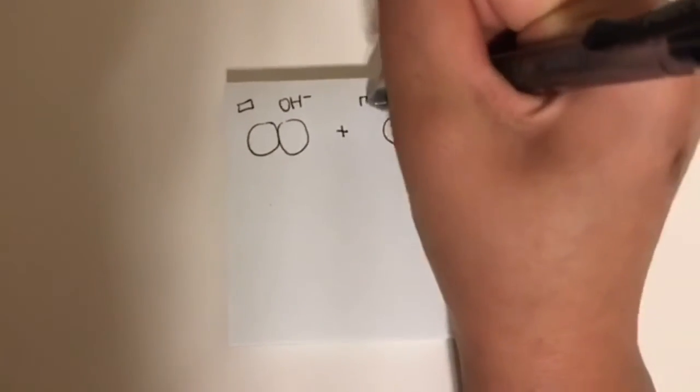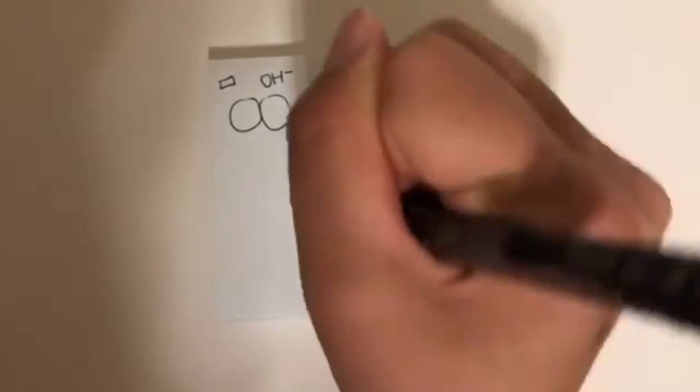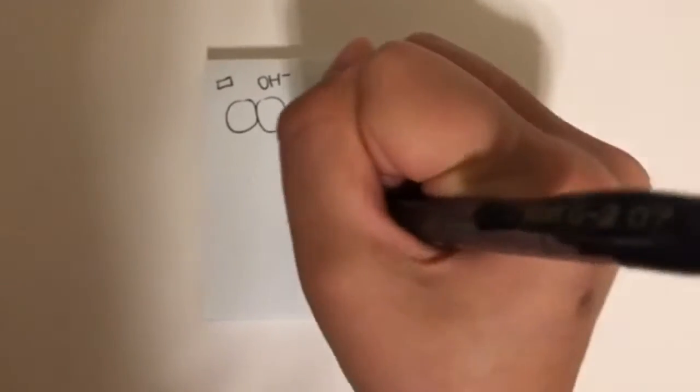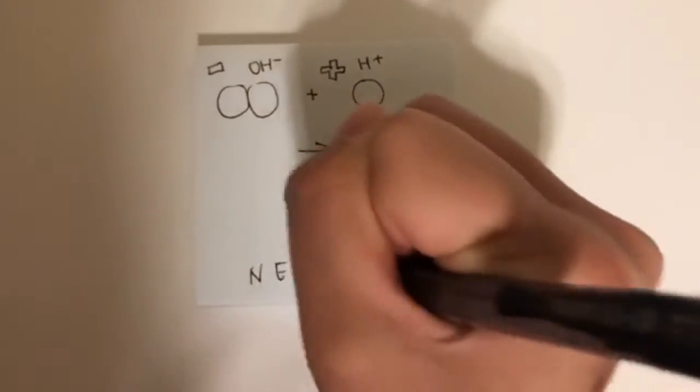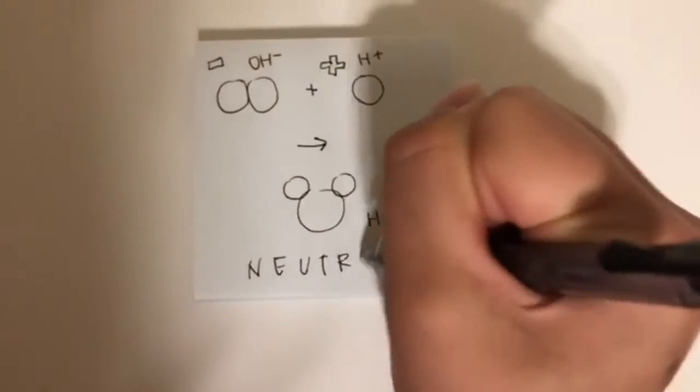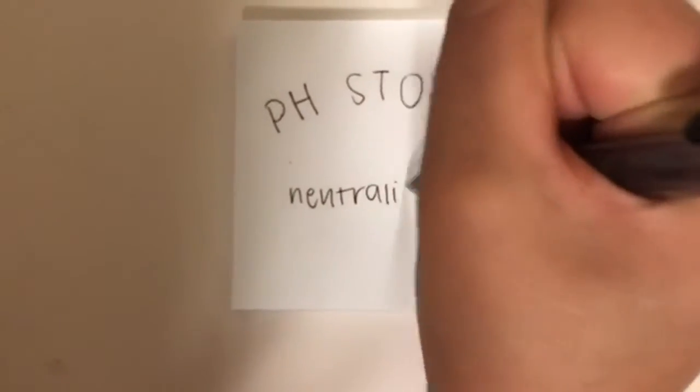So we say acids and bases will neutralize each other. Electrons will be shared between one another. H2O is amphoteric — it's a pH story when they neutralize.